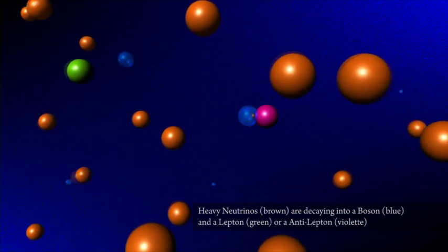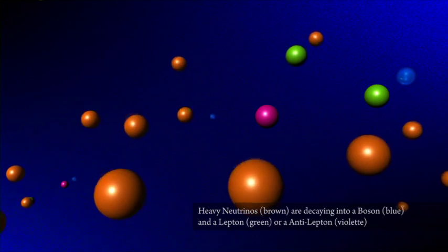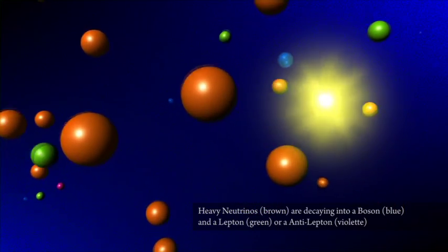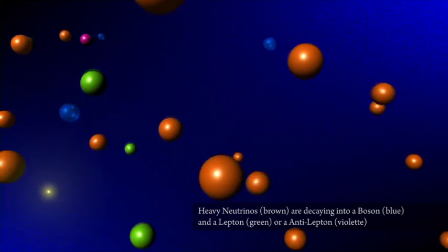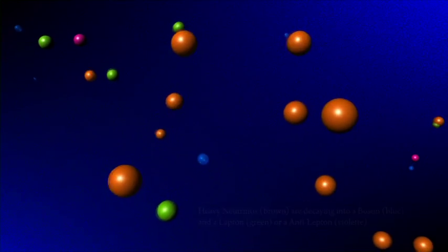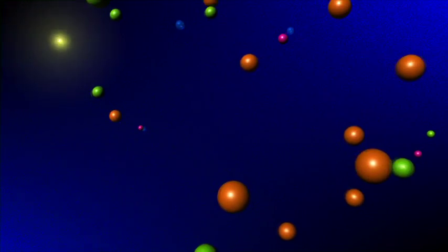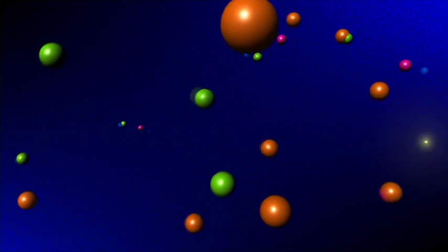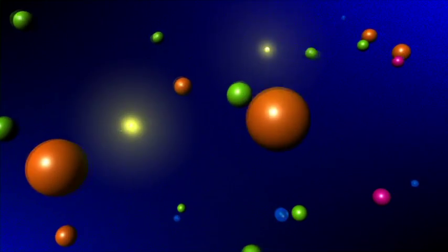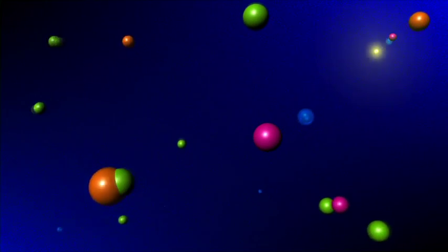Theories predict that unstable heavy neutrinos could have been produced during the Big Bang. Subsequently, they decayed into matter or antimatter with a slight preference for matter. As time evolved and the matter and antimatter particles annihilated each other, a tiny excess of matter remained.